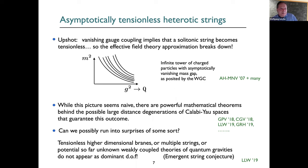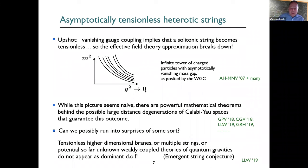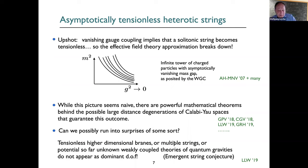This picture seems very naive, but the physics intuition is correct, and there exist very powerful mathematical theorems behind the geometry of large distance degenerations — degenerations of Calabi-Yau spaces, whether large complex structure limits or large Kähler parameter limits. There have been many recent papers in the physics literature on this subject. One question is whether we can run into bad surprises going into this limit, for example two string theories becoming simultaneously tensionless.